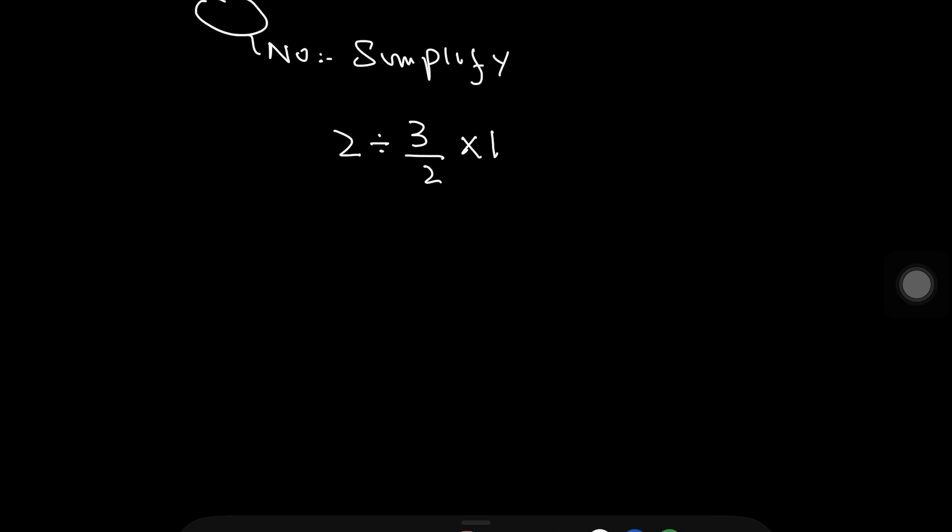But in this example, we do not use the order of operation. Why? Because in this example, there are only two arithmetic operations included: division and multiplication. Both are similar.